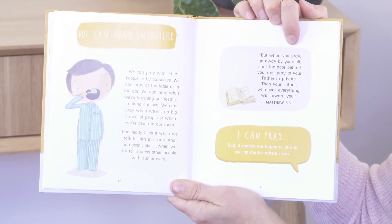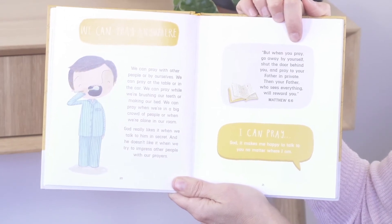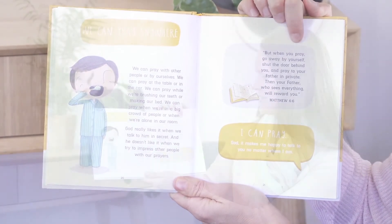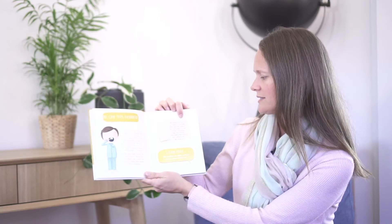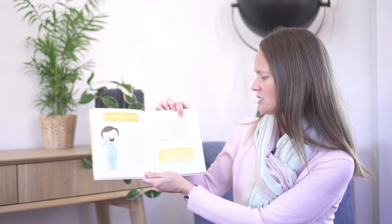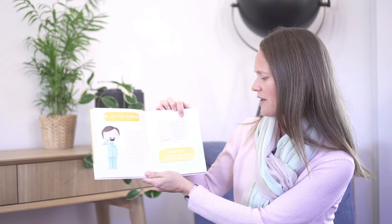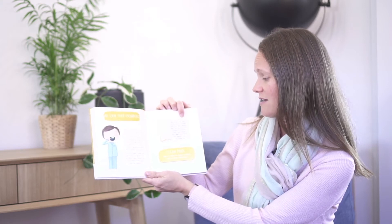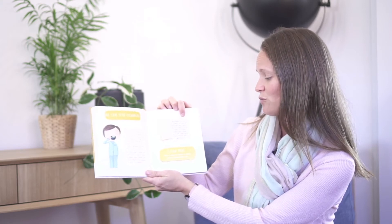There's a verse from Matthew, chapter 6 verse 6. It says: But when you pray, go away by yourself, shut the door behind you and pray to your father in private. Then your father who sees everything will reward you.